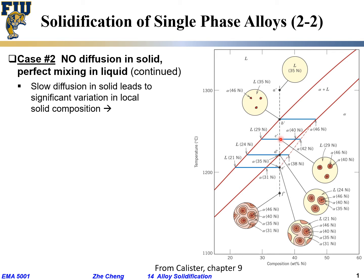Now let's cool down a little bit to a lower temperature. We are assuming uniform mixing — uniform liquid composition — but no diffusion in the solid. When the system temperature reaches this lower temperature, the newly formed solid composition is determined by the intercept of the isotherm with the phase boundary, which is roughly 40 percent. So the microstructure still has a little bit of solid dispersed within liquid, but the very center of the solid has composition 46, and the outside is roughly 40 percent nickel.